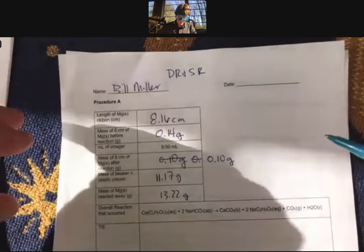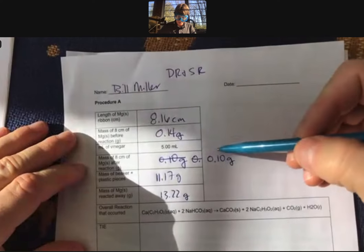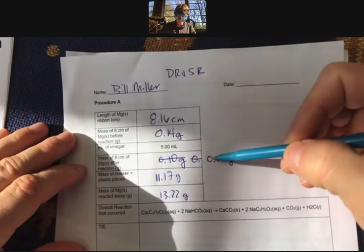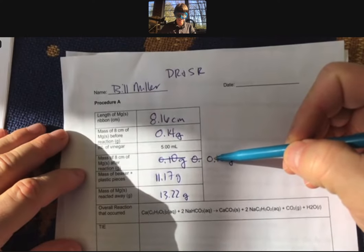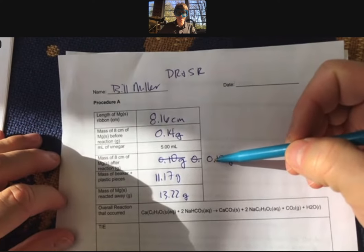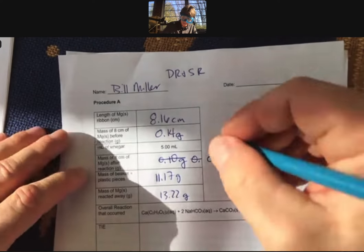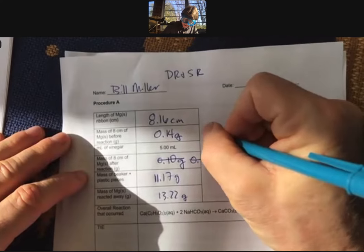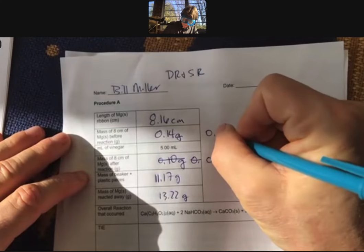In order to do that, we need to look at the difference in mass here to get the mass that was reacted away of magnesium, and that's not too bad.